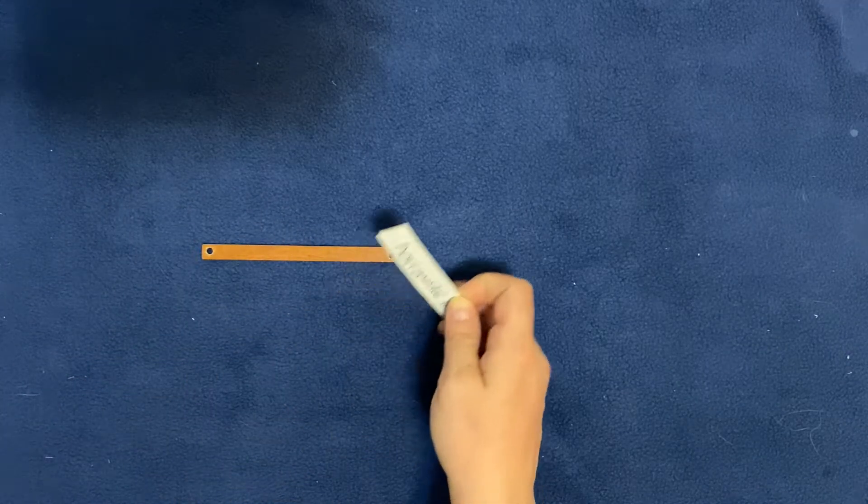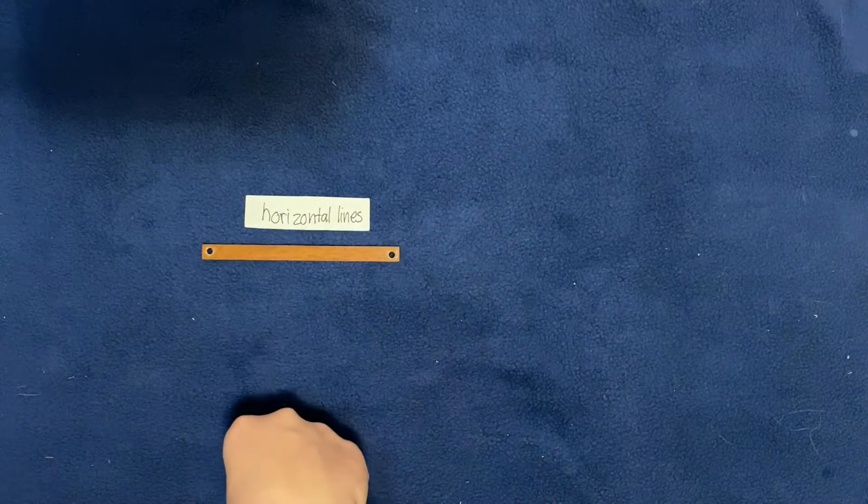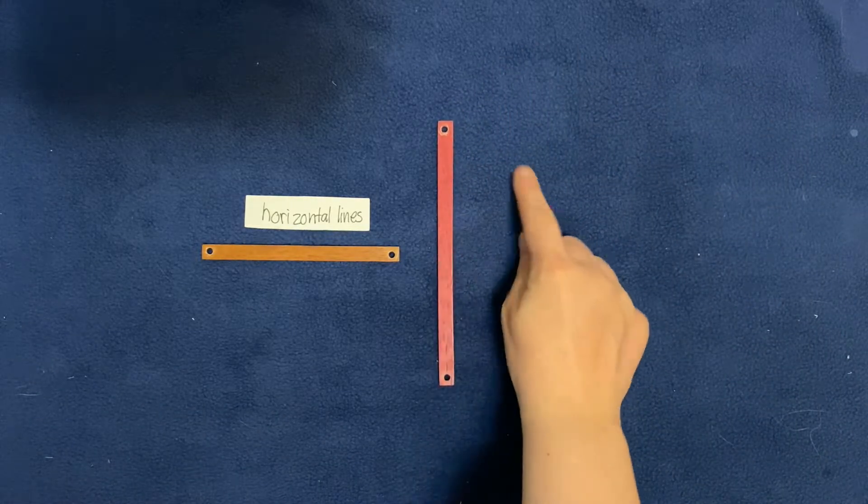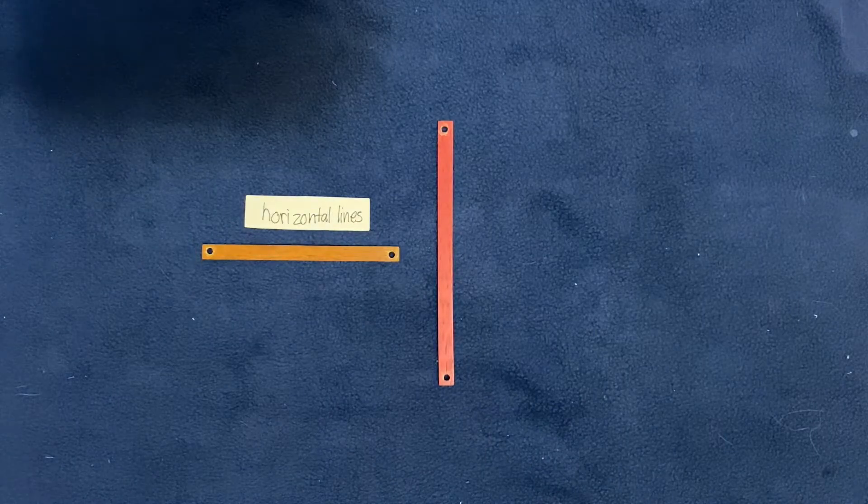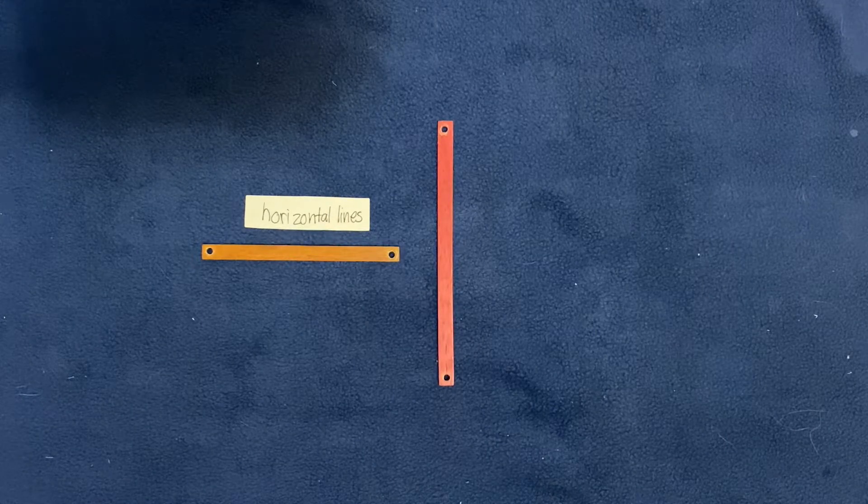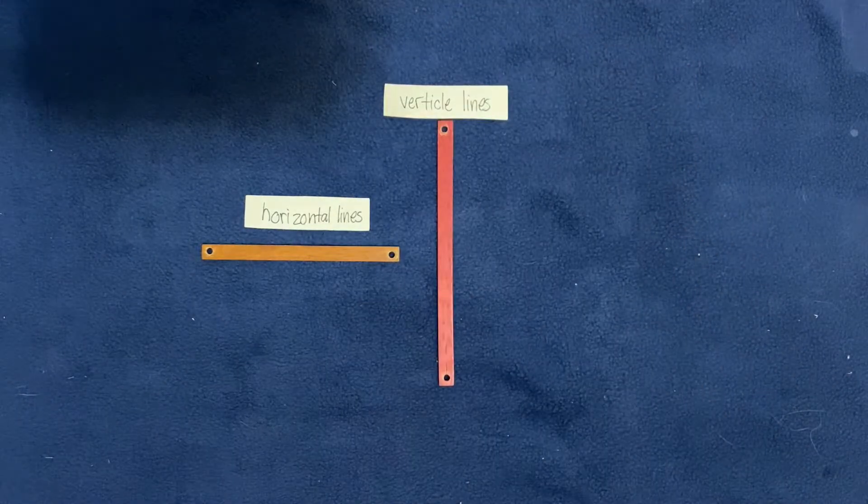Now here I have a line that's going up and down like a skyscraper, straight up and down. When a line goes up and down we call that vertical, a vertical line.